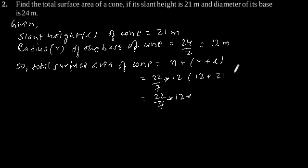This is equal to 22 by 7 into 12 into 33, which is equal to 1244.57 meter square. So the total surface area of cone is 1244.57 meter square.